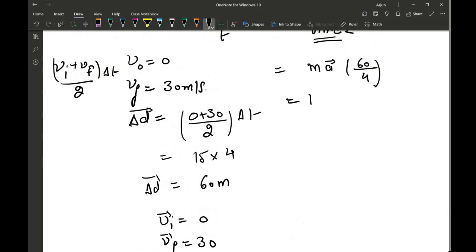And then mass is 1250 multiplied by 7.5 multiplied by 60 divided by 4. So if I do the math here, 1250 multiplied by 7.5 multiplied by 60 divided by 4, that's going to come out to be 140625 watts, or I can write it as approximately 141 kilowatts.